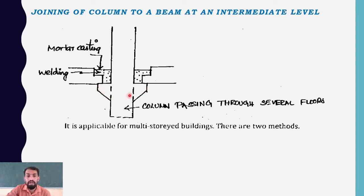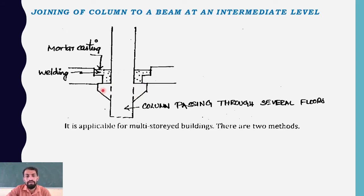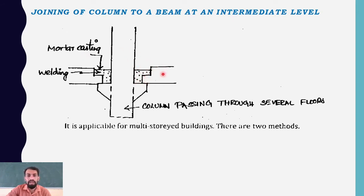At the beam level, columns are cast. A steel plate is provided at the bottom, followed by a welding joint, and then concrete or mortar casting is made. This intermediate column-to-beam joint is made as either a firm joint or a hinge-type joint. It is applicable for multi-storied buildings.